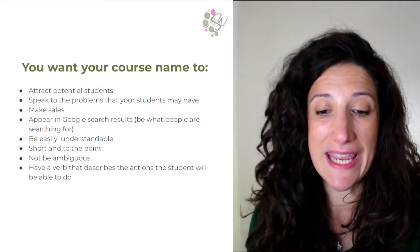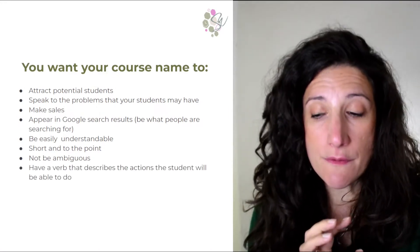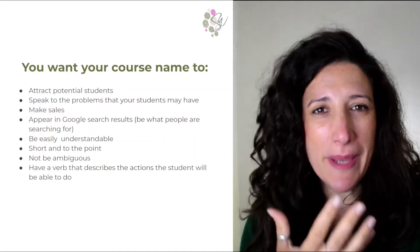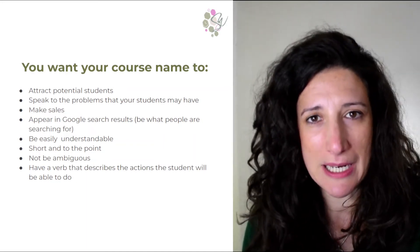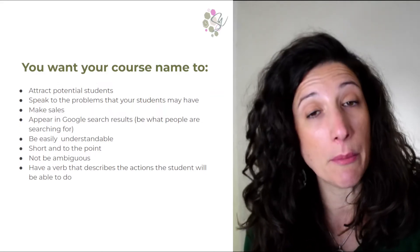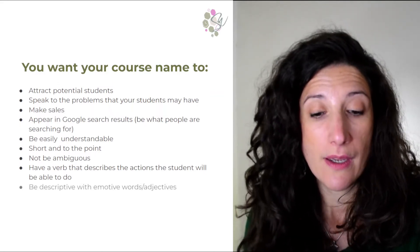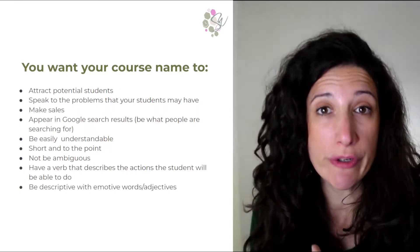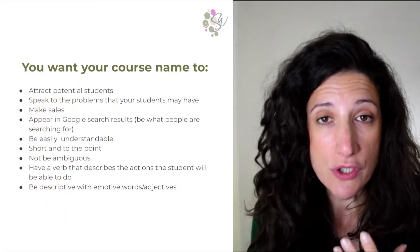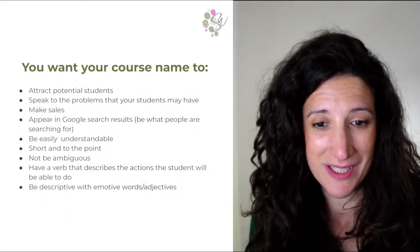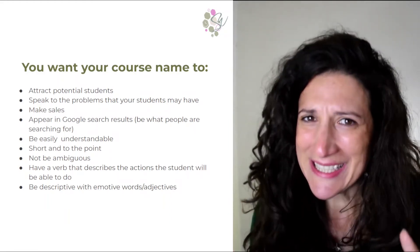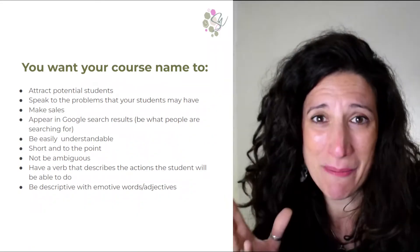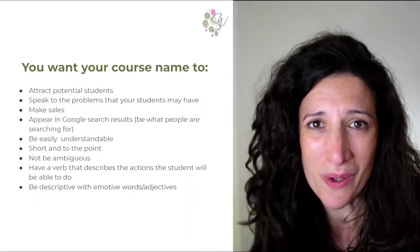You want your course to have a verb — a verb that describes the actions, the things someone will be able to do. It explains the abilities and skills that someone would learn throughout your course. You also want your course name to have descriptive words, descriptive adjectives as well. That is a lot of things to consider, all in a course name that might only be five to six words.